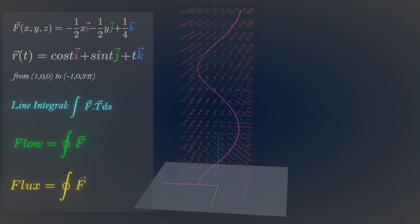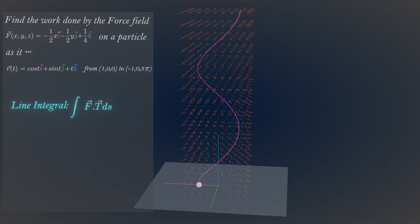Now let's find the work done by this force field on a particle as it moves along the helix, given by this parametrized equation from the initial point to the final. We can evaluate the work done by using this line integral.